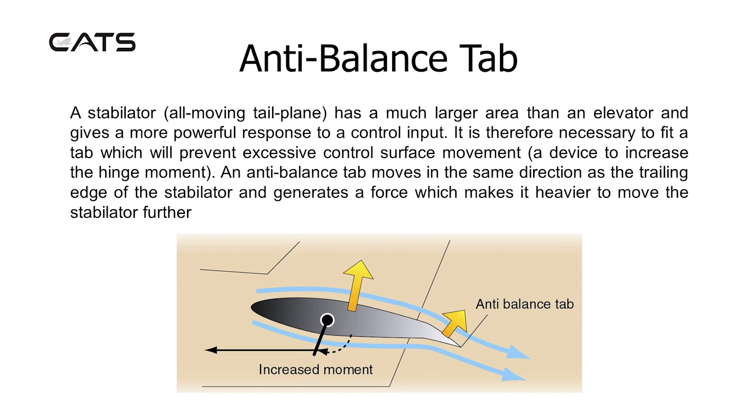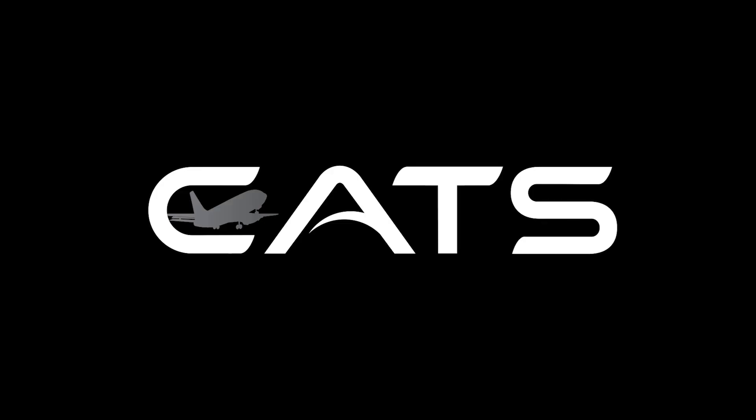Anti-balance tab. A stabilator, an all-moving tailplane, has a much larger area than an elevator and gives a more powerful response to a control input. It's therefore necessary to fit a tab which will prevent excessive control surface movement, a device to increase the hinge moment. Anti-balance tab moves in the same direction as the trailing edge of the stabilator and generates a force which makes it heavier to move the stabilator further.